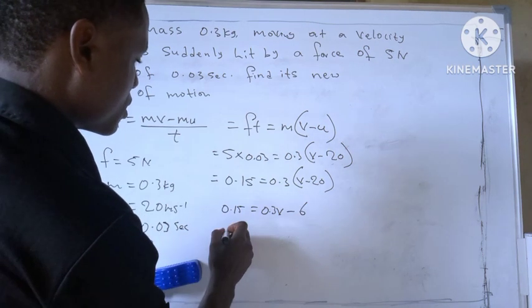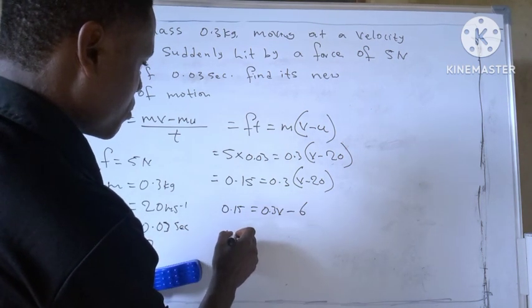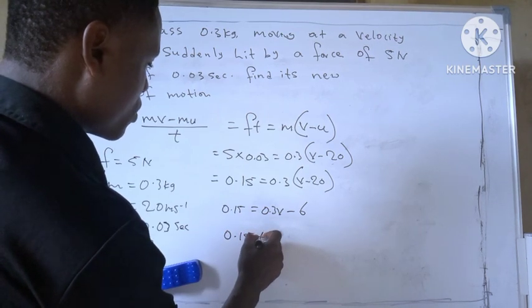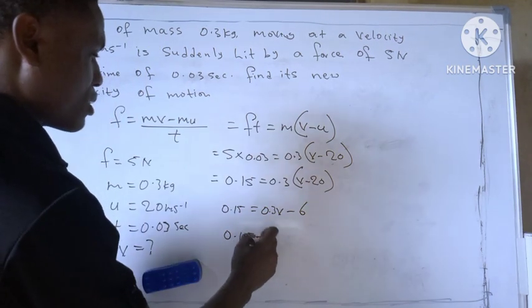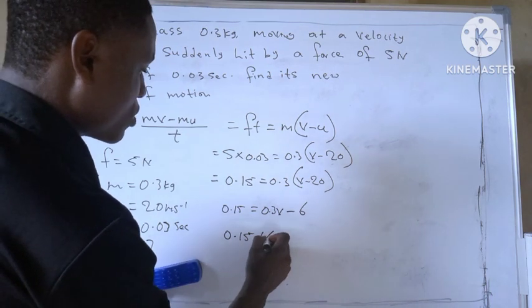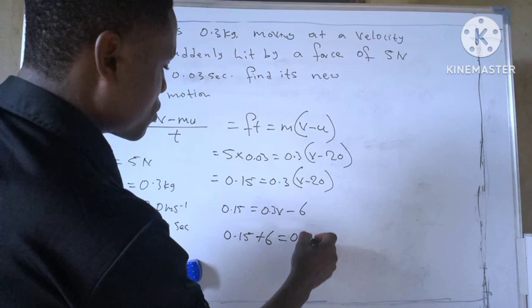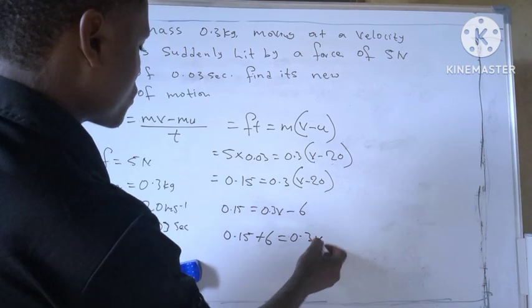So let's collect like terms. We have 0.15, when minus 6 crosses to this side it will give us plus 6, equal to 0.3V.